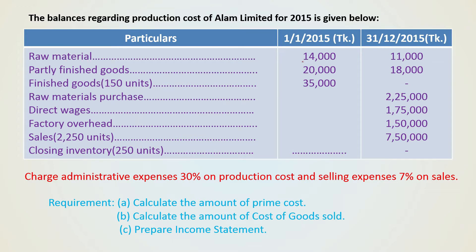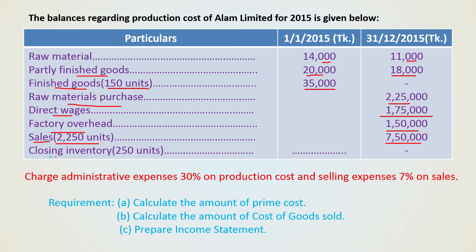Raw material: opening 14,000 taka and closing 11,000 taka. Partly finished goods or work-in-process: opening 20,000 taka, closing 18,000 taka. Finished goods: 150 units opening, 35,000 taka, but closing amount is missing. Raw material purchases 2,25,000 taka. Direct wages 1,75,000 taka. Factory overhead 1,50,000 taka. Sales: 2,250 units, 7,50,000 taka. Closing inventory: 250 units — amount is missing.